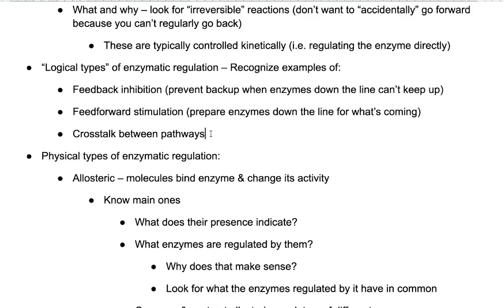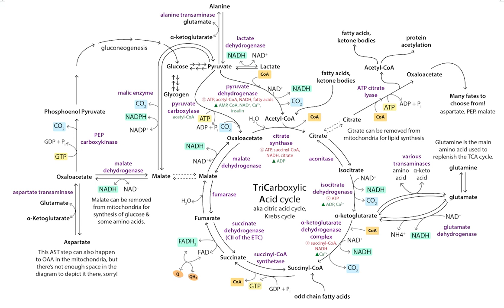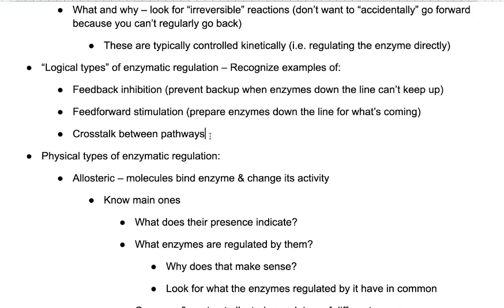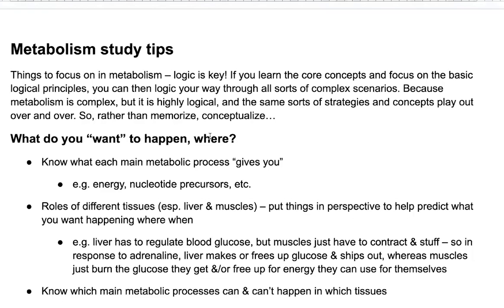For example, acetyl-CoA can be produced by the breakdown of pyruvate or by the breakdown of fatty acids. So you're going to want some source crosstalk between those pathways to prevent making too much acetyl-CoA. You have to think about all the different places it's coming from, not just the one pathway you're looking at right now. This gets you back to thinking about all of these pathways and being really comfortable with interpreting the charts. Although you can't memorize everything, you should be able to interpret the charts, look for these examples of core principles, and logic your way through complex situations.